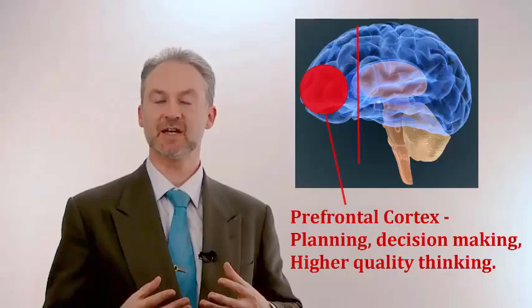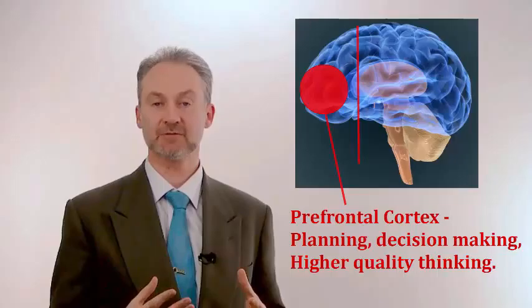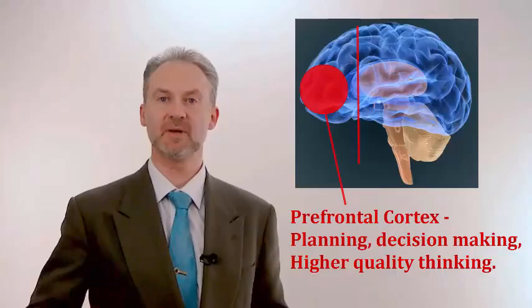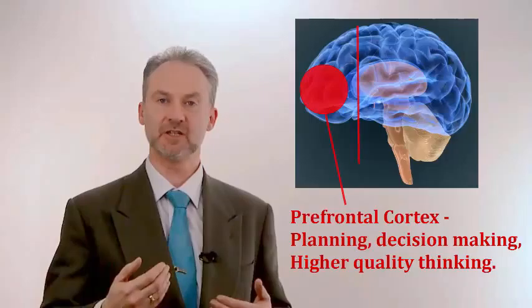But what's happening in our minds when that occurs is something very specific and very special. If we look at this brain, we can see this area here, which is the prefrontal cortex. This is the part that's active when we're doing good thinking, clear thinking, planning stuff effectively. It's the part that pattern matches for success.